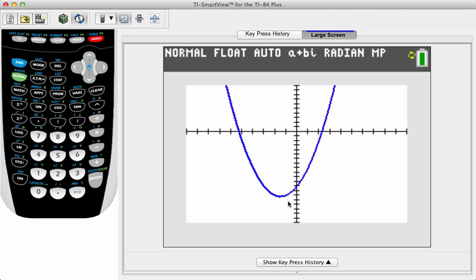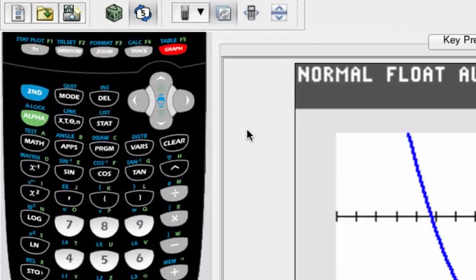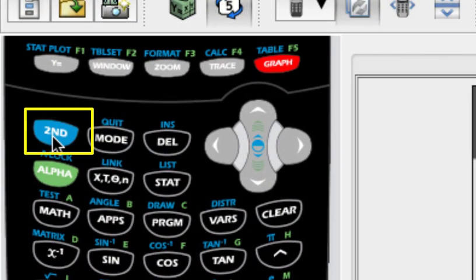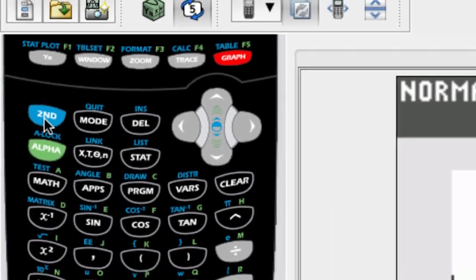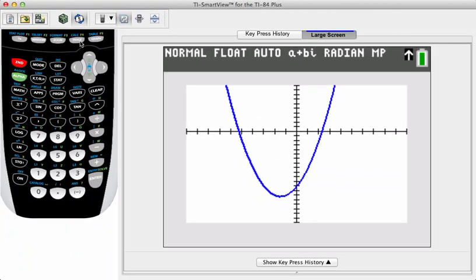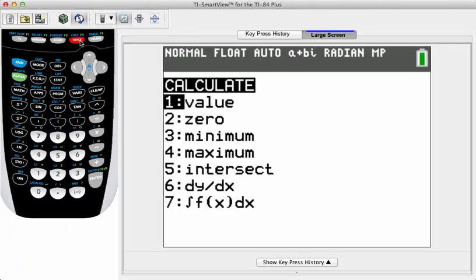And look at that. Here is the very bottom, the very minimum of our function. Okay, this will be good. Now, here's how we find exactly where that minimum is. Begin by pressing the second key, and then the key marked trace, again, on the upper row of the keypad. Second, trace. All right, since this has a minimum to it, we're going to choose number three, minimum. And then press enter.